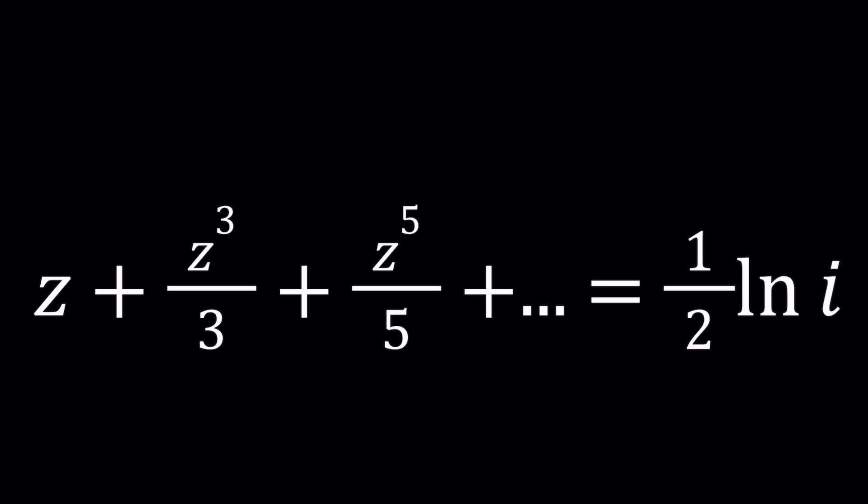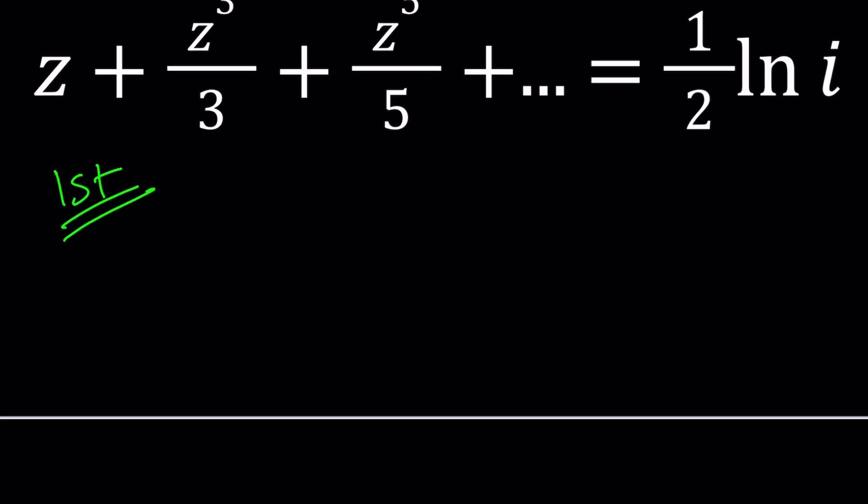I'm going to be presenting two methods. For my first method I'm going to consider 1 over 1 minus z squared. You might be questioning why you start with something like that and my answer would be you'll see. Let's write this using the formula for the sum of an infinite geometric series. The absolute value needs to be less than 1.